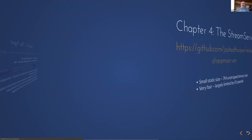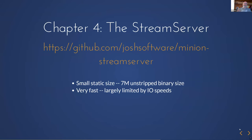The stream server itself is about seven megabytes unstripped and it's very fast. On my laptop with a local Postgres database, it pushes about 60,000 messages a second — the main limitation being how fast Postgres can accept them, not the stream server itself. If streaming to something like /dev/null, that 60,000 goes up to several hundred thousand a second.